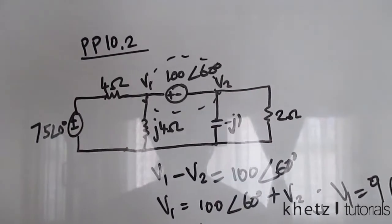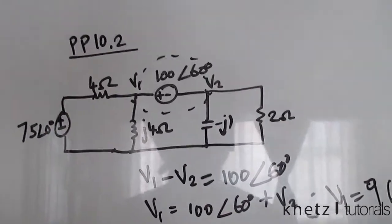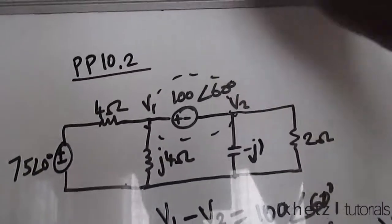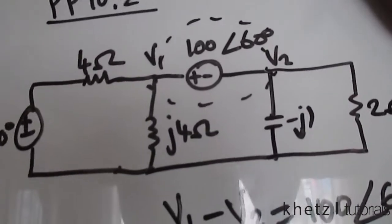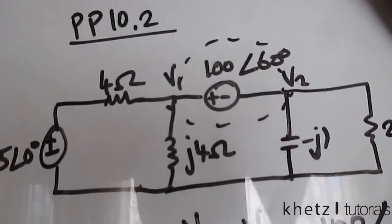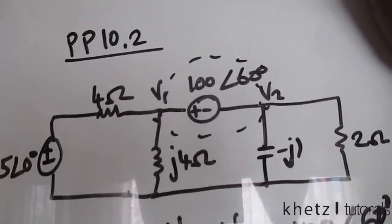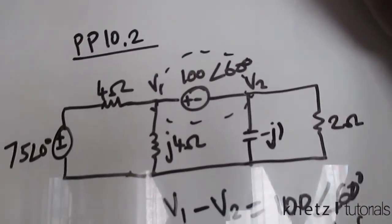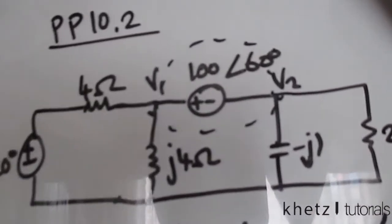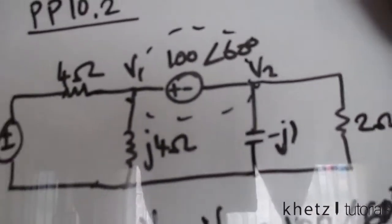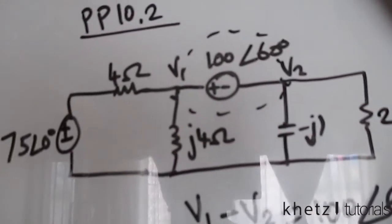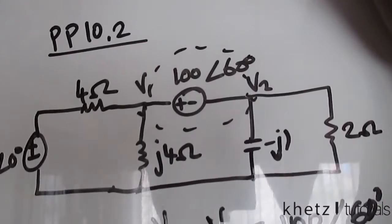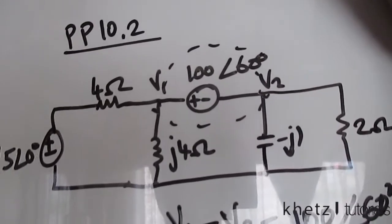Welcome to GUTS Tutorials. In this video I'll be covering practice problem 10.2. I already have it written out and I'll just explain how to go about it. The first thing to notice is that in this circuit, we are asked to find V1 and V2.